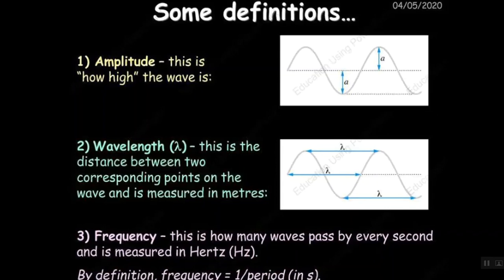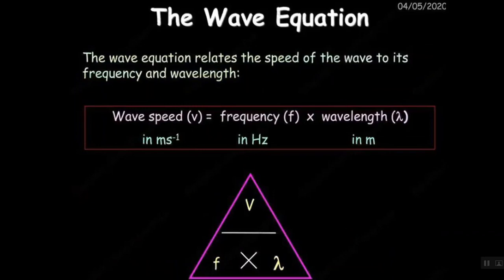The next thing that we have to remember is that there's an equation for this where the wave speed is the frequency times the wavelength. If you remember from IGCSE we said that speed is equal to distance over time.